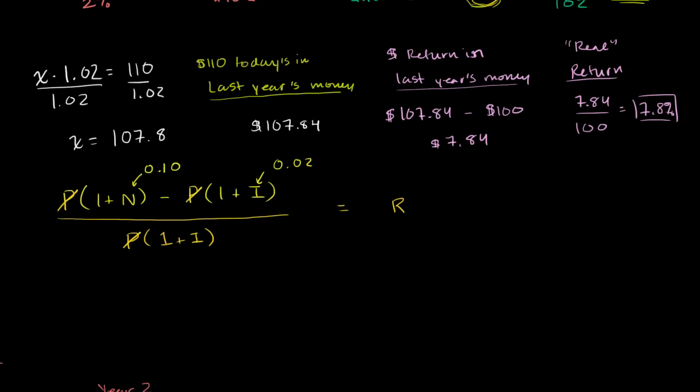And then we get in the numerator, we get 1 plus n minus 1 plus i. I'll write it like that still. All of that over 1 plus i is equal to r.